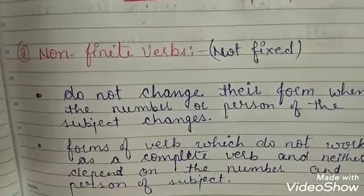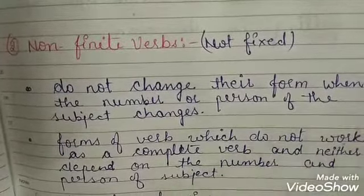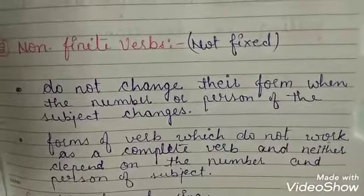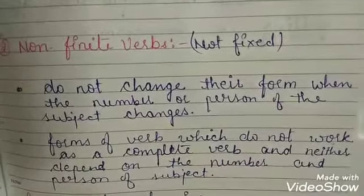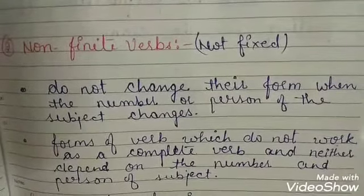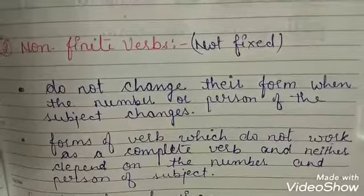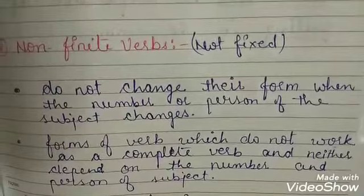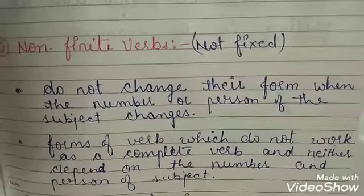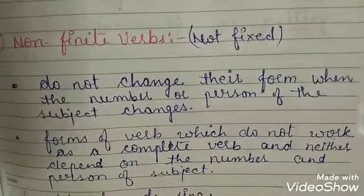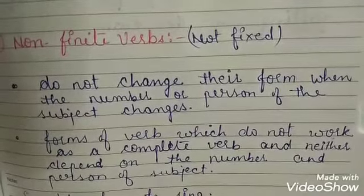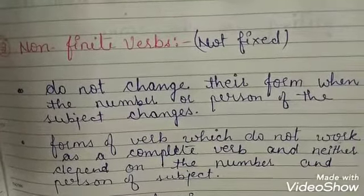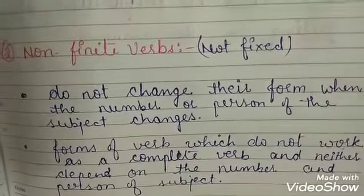Now let's move on to the second type of verbs: non-finite verbs. Non-finite means not fixed. Non-finite verbs do not change their form when the number or person of the subject changes. Forms of verbs which do not work as a complete verb and neither depend on the number and person of the subject — these verbs are not bound by number, person, tense, and subject of the sentence.